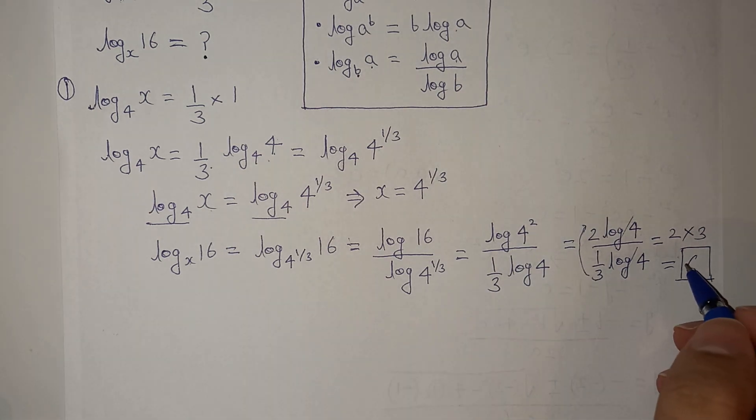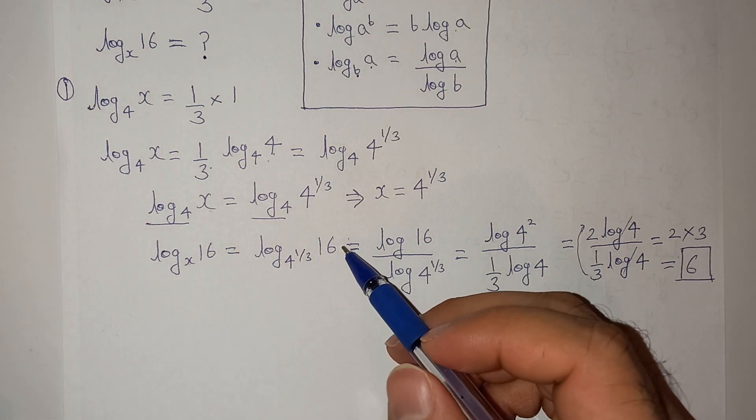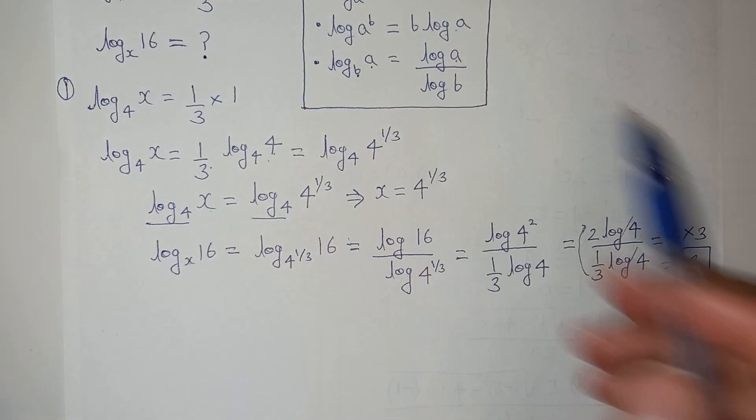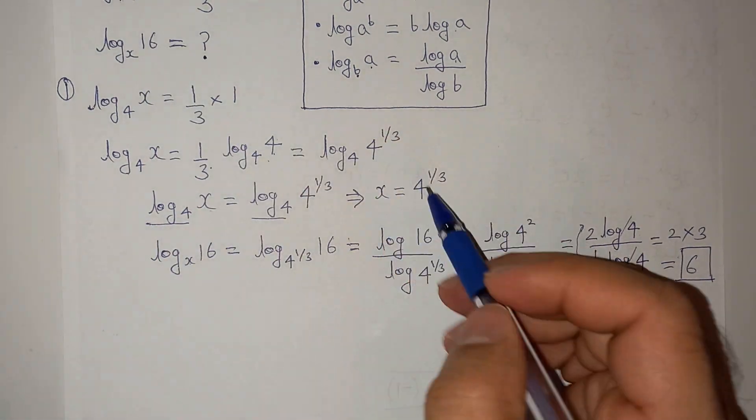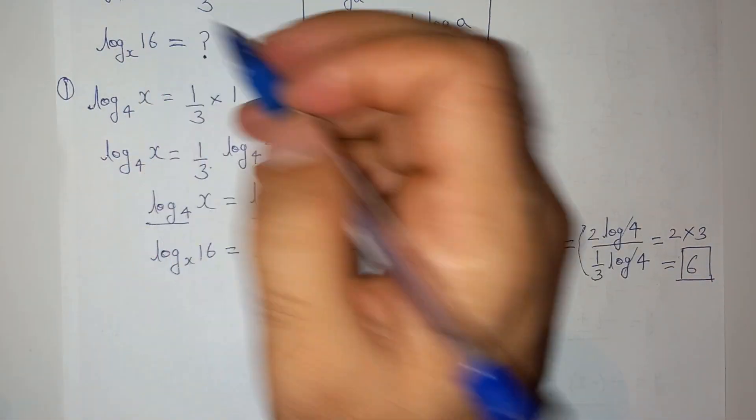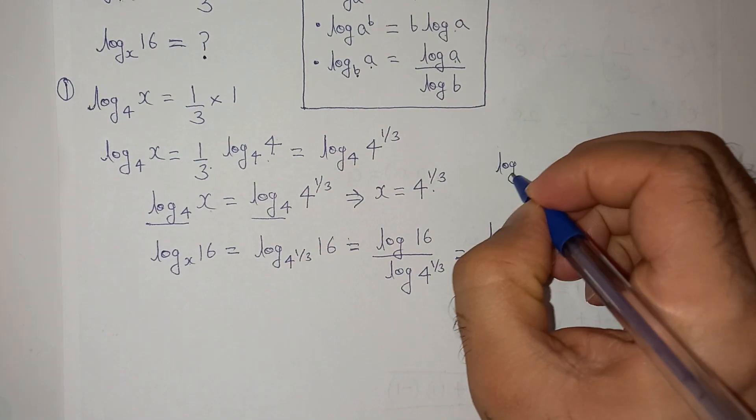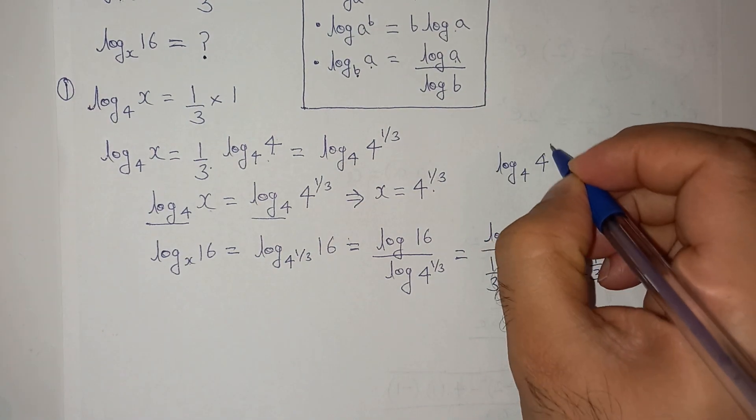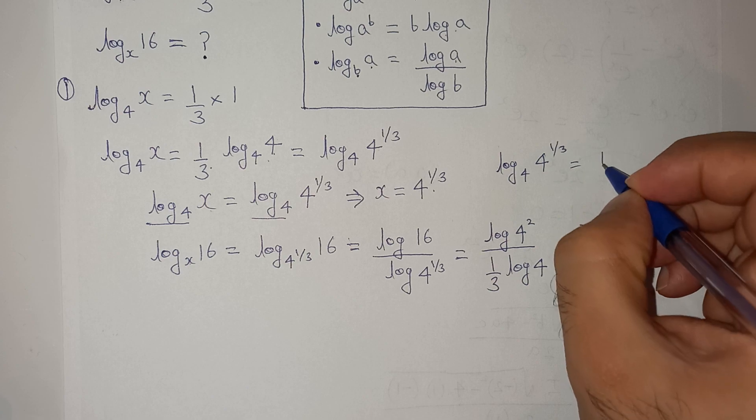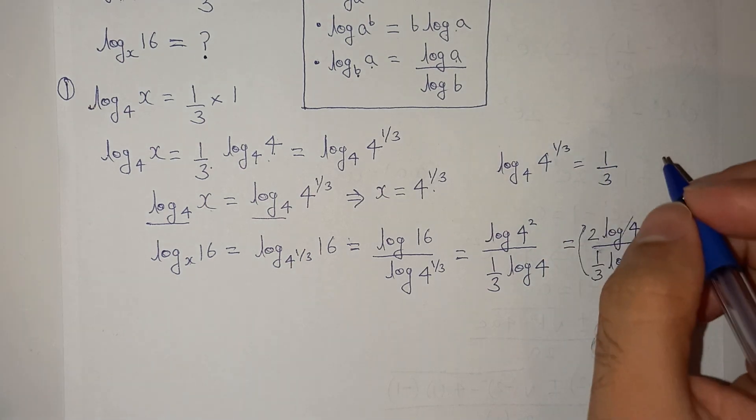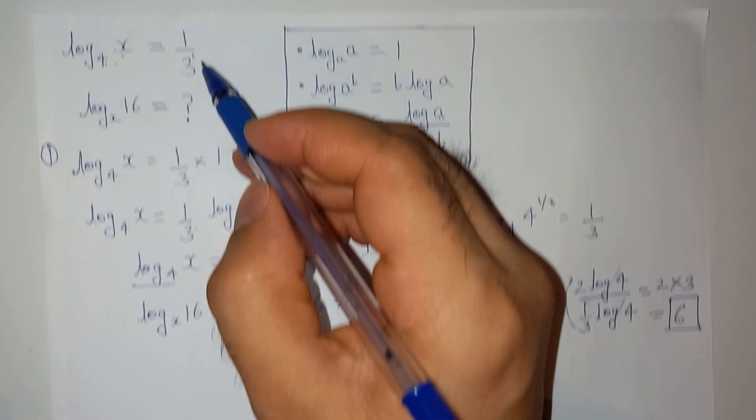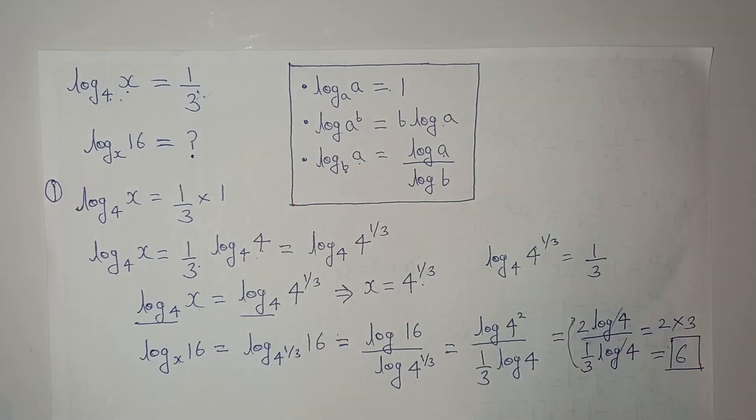So this is the shortcut by doing inspection. You can just put the value as x as 4^(1/3). Basically, if you put log₄(4^(1/3)), you will get the value as 1/3, which is this one. So this is shortcut.